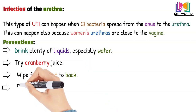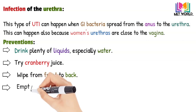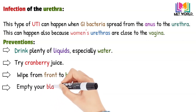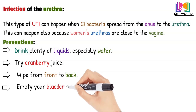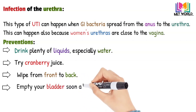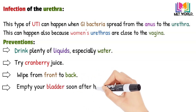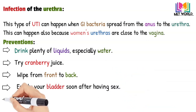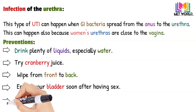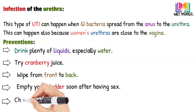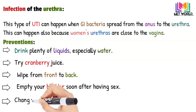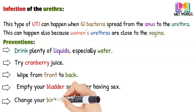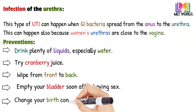Next, empty your bladder soon after having sex and drink a full glass of water to help flush bacteria. Last, consider changing your birth control method — diaphragms, unlubricated condoms, or condoms treated with spermicide can contribute to bacterial growth.